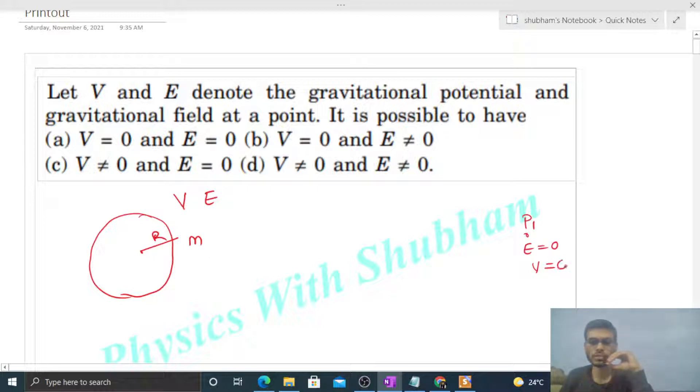So option (a) will be correct. Similarly, if you go to some finite distance d from the center of this shell, and this point P2 is outside this shell at a finite distance d from the center, then the field there is not equal to zero.